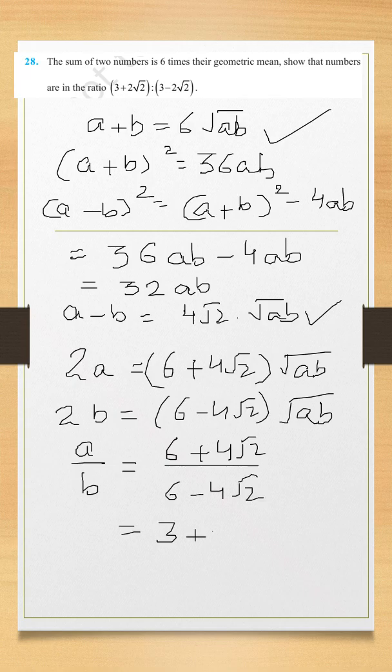Then we simplify this to 3 plus 2 root 2 upon 3 minus 2 root 2. This is what was given. We have proved the ratio is equal to this.